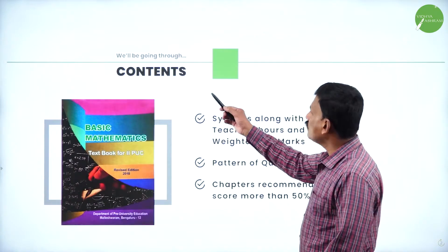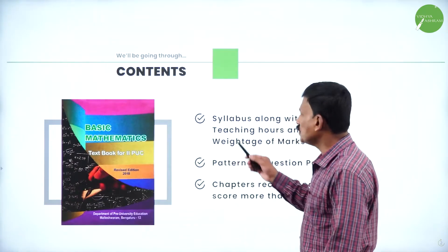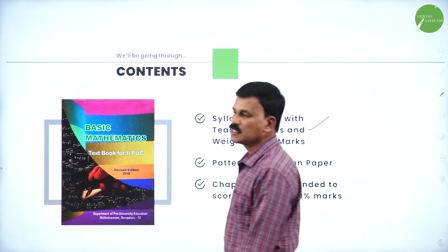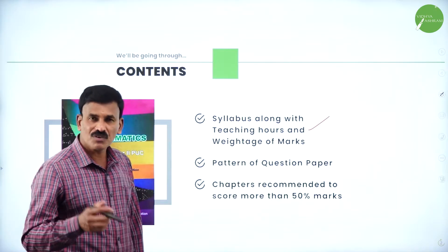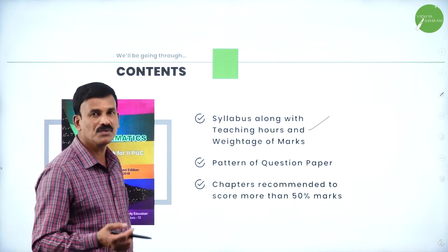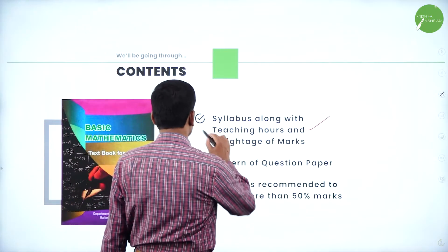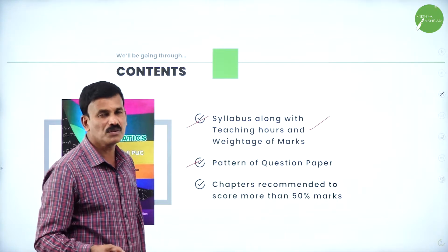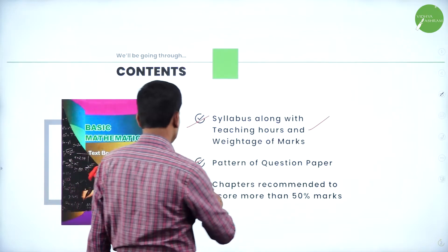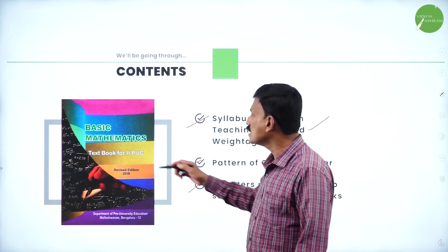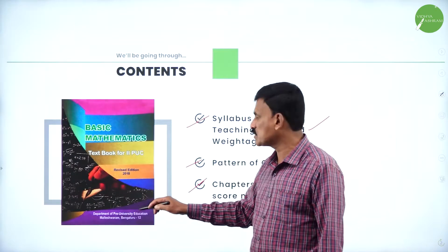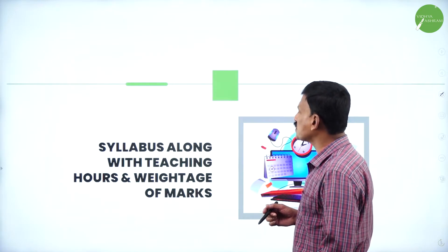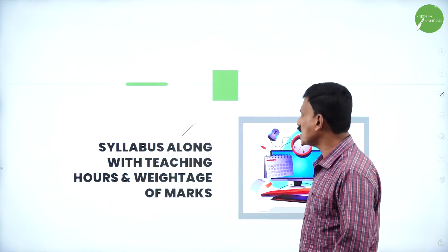Now let us come to the contents. In this session I am going to discuss the syllabus along with the teaching hours and the weightage of marks — what are the detailed chapters you are going to study, the weightage for each chapter, and the question paper pattern. We will also cover which chapters are recommended to score more than 50-60% of the marks. The textbook we are going to use is the basic mathematics textbook of PUC, an NCERT published textbook from the department of pre-university.